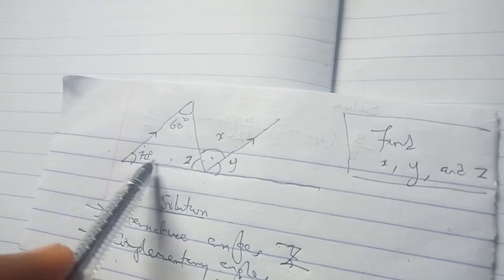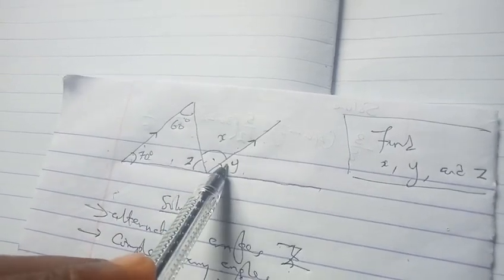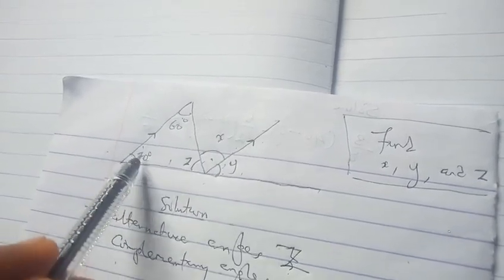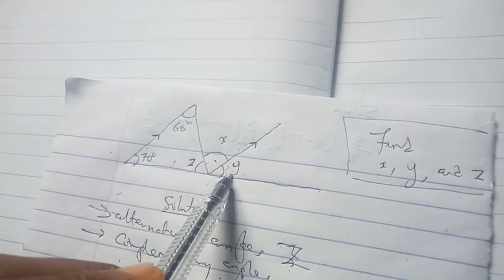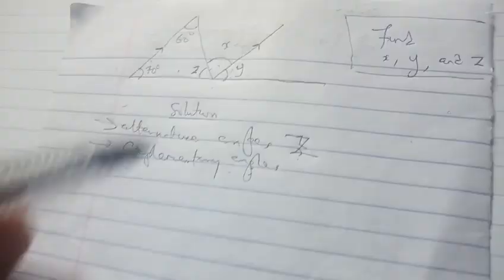Complementary angles - angles that align on the same line and the lines are parallel to each other. This angle and this angle, they're equal. Can you see that? Therefore, X is equal to 60 degrees from here. Why? You state your reason: alternative angles. Alternative angles are equal.